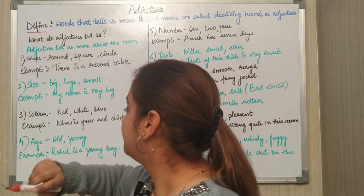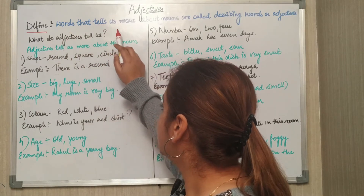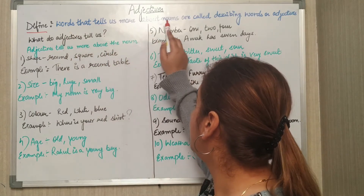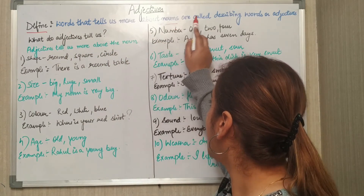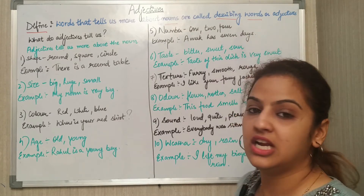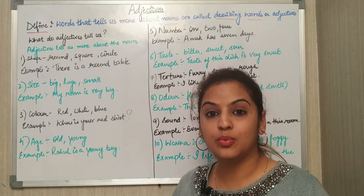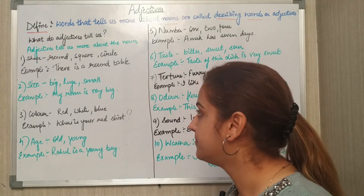Define: Words that tell us more about nouns are called describing words or adjectives. Now which are those words?